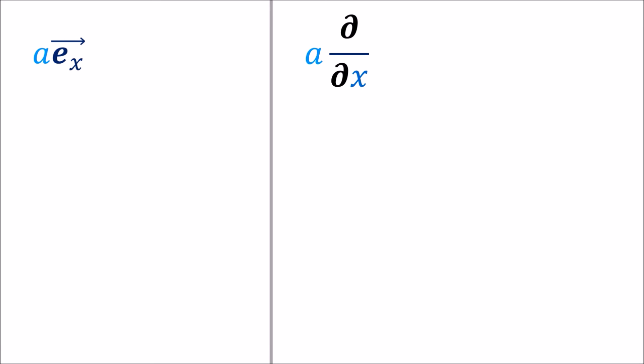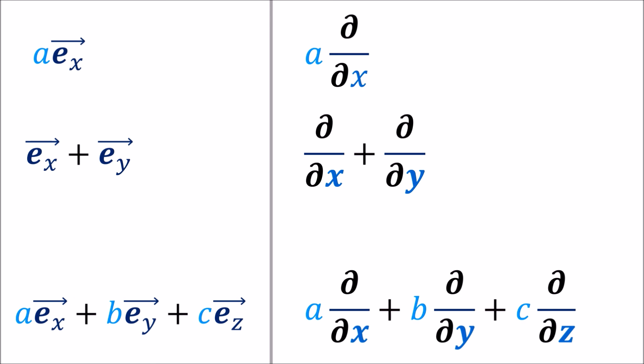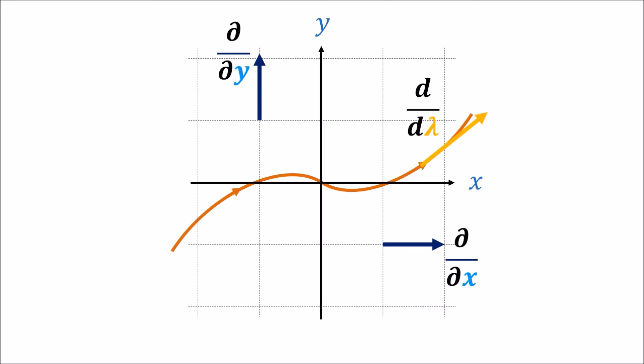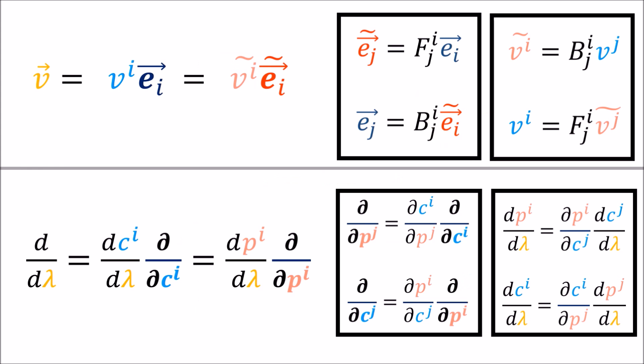This might seem like a strange choice — how can a derivative operator be considered a vector? It's actually not that strange. We can scale derivative operators and add them together, just like vectors, making linear combinations out of them. Each derivative operator also has a direction associated with it: the partial derivative with respect to x points in the x direction, with respect to y in the y direction, and the derivative with respect to λ points along the curve. So derivative operators can have a magnitude and a direction just like ordinary vectors. Moreover, these partial derivative operators obey the forward and backward transform rules we expect from vectors, with the Jacobian and inverse Jacobian as the transforms.